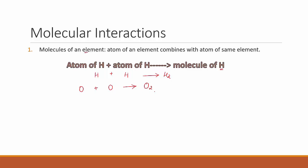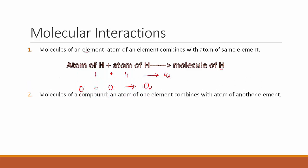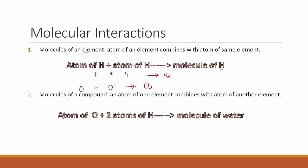A molecule of a compound is formed when an atom of one element combines with an atom of a different element. For example, one atom of oxygen combines with two atoms of hydrogen to give a molecule of water, H2O. We already know that water is a compound, so you end up with a molecule of a compound because two different elements are coming into play.